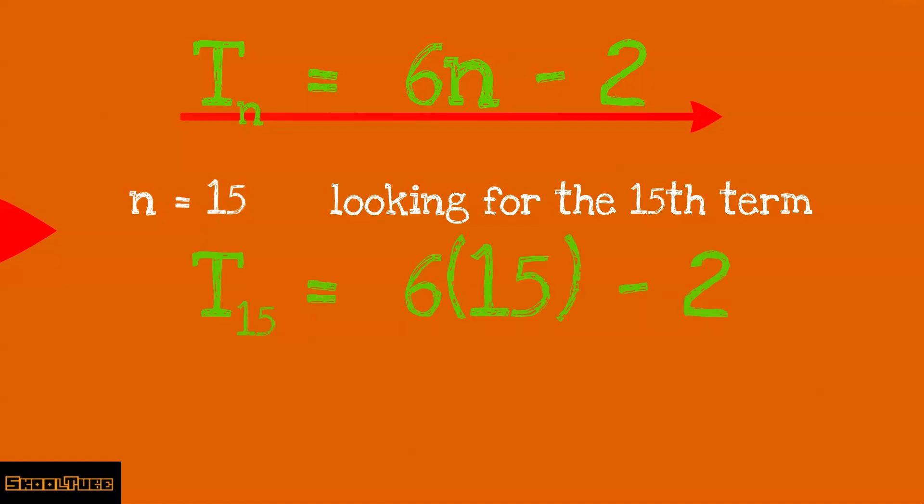So in the place of n, we will substitute 15. So T15 equals 6 multiplied by 15 minus 2. This is going to equal 88. So T15 equals 88. What this means is that the 15th term of the sequence is equal to 88.